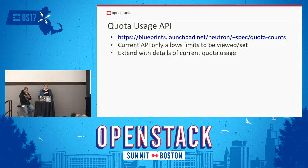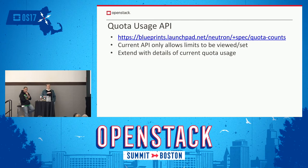The quota usage API addresses limitations in the current quota API, which only lets operators set quotas and lets tenants view their limits but not how close they are to hitting them. There's going to be a new details endpoint on the quota API where users can look at their own usage, or operators can ask how many ports or networks a tenant is using, without having to do full port listings.